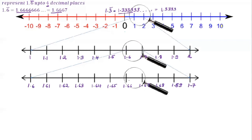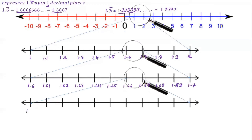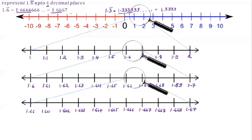Divide the space between 1.66 and 1.67 into 10 equal parts and imagine you are having a magnifying glass. It looks like this: 1.661, 1.662, 1.663, 1.664, 1.665, 1.666, 1.667, 1.668, 1.669. Now we want 1.6667, which lies between 1.666 and 1.667.